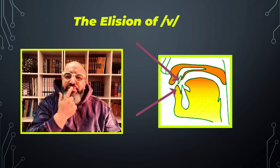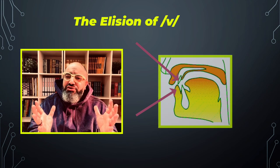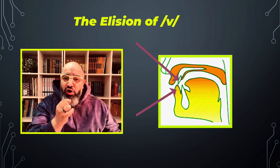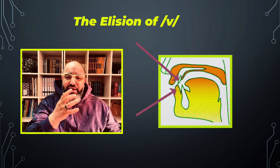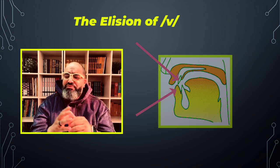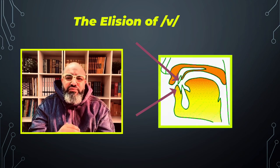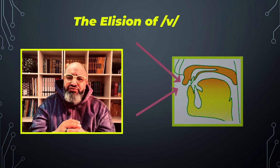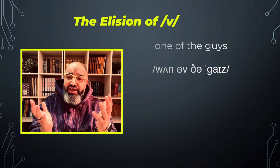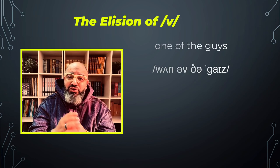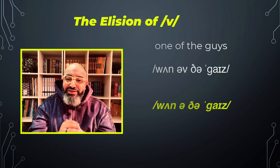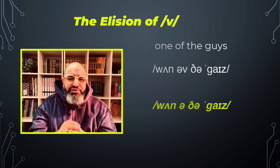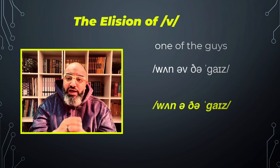Lower lip, upper teeth. Now, the V consonant sound is omitted in the preposition 'of' when it's followed by a consonant. For example, let's look at this one: 'one of the guys' — in connected speech we would say 'one-of-the-guys,' 'one of the guys.' So you may say: 'One of the guys called me last night.'